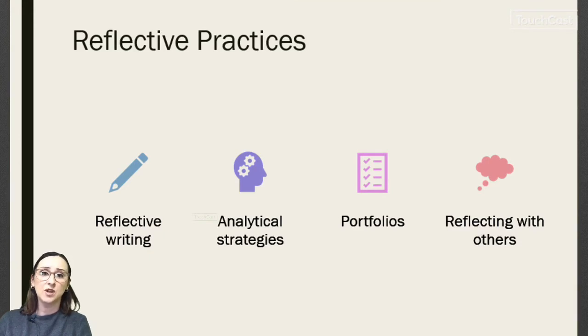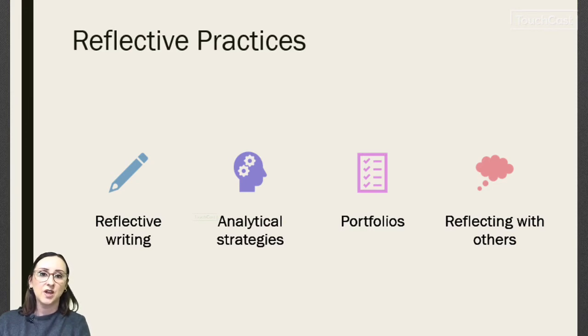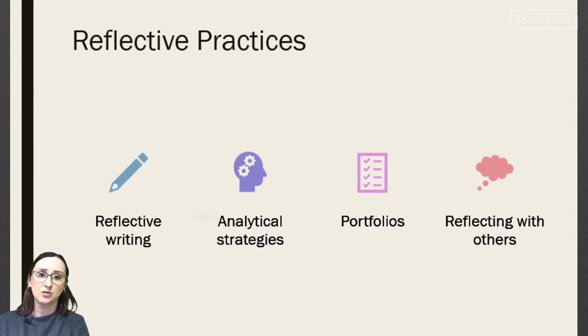Now we have a better understanding of the reflective practice cycle and some reflective models, we should consider some activities you can engage in when reflecting. Remember, reflection can be really helpful to your personal development. The first one is reflective writing — this is where you use the models introduced in this session and write down your reflection. As you write you can develop a better understanding of events, and the very process of writing can help you work through your thoughts. There are also analytical strategies where you take a step back, become more objective, understand the event from different perspectives, and think of potential alternative outcomes.